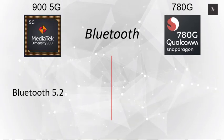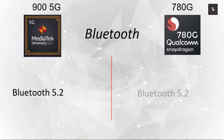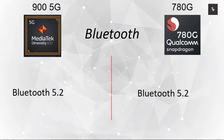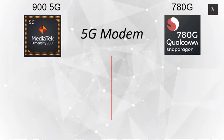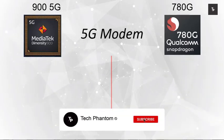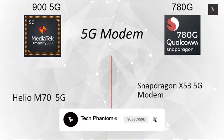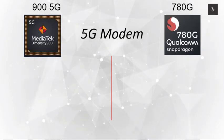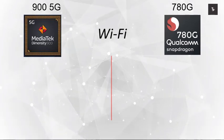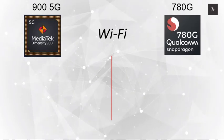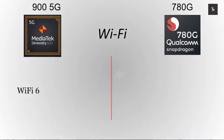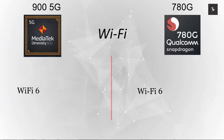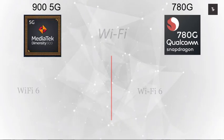On the connectivity side, both processors support Bluetooth 5.0. Both also have a 5G modem: the MediaTek uses the Helio M70 5G modem, while the Snapdragon has its own integrated 5G modem. Both processors also support the latest Wi-Fi 6.